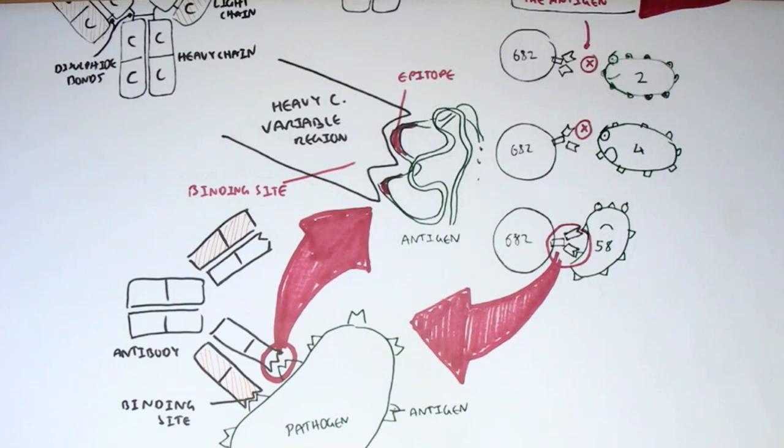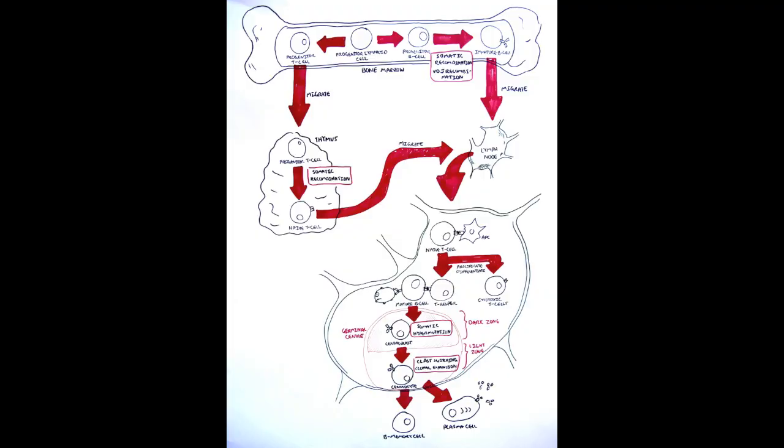That concludes the video on the diversity of antibodies and T-cell receptors. If you click on the links provided, you can look at somatic recombination from the progenitor T-cell to the naive T-cell and how this increases the specificity and diversity of T-cell receptors. You can also click on the link for somatic recombination from the progenitor B-cell to the immature B-cell — the VDJ recombination — and how this increases diversity and specificity of antibodies. In the lymph nodes, you can also click on somatic hypermutation.